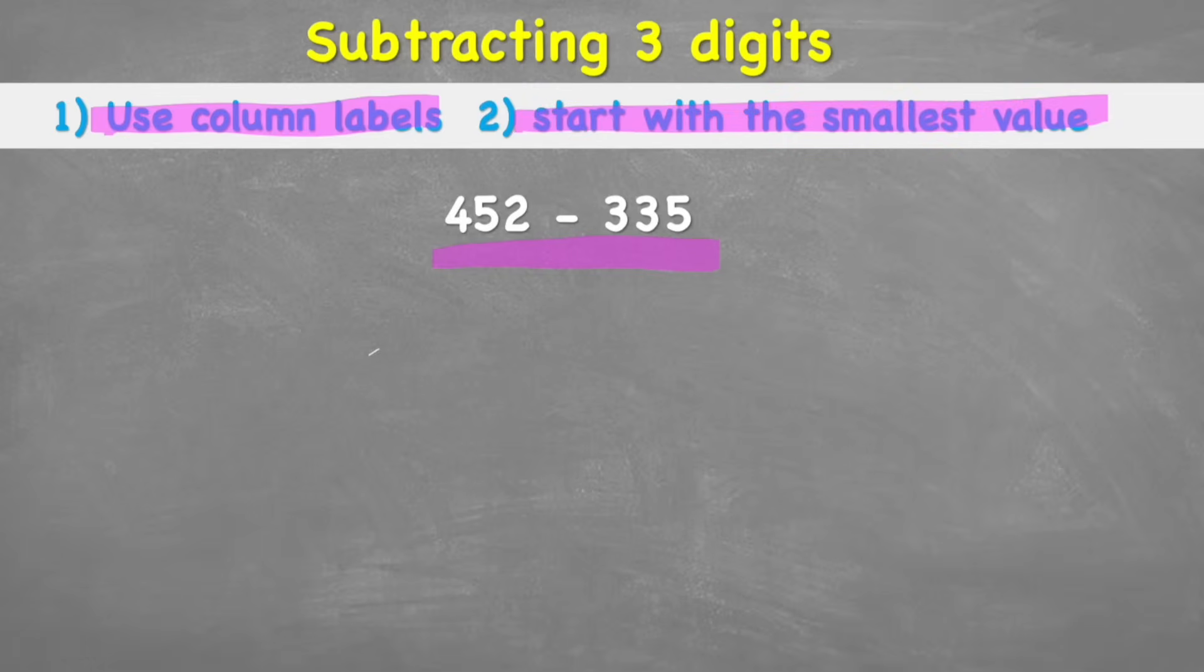Well, our column labels, we are simply just going to label the numbers that are in our big number. So we have 452, which is made up of two 1s, five 10s, and four 100s. And then we have 335, which is five 1s, three 10s, and three 100s.